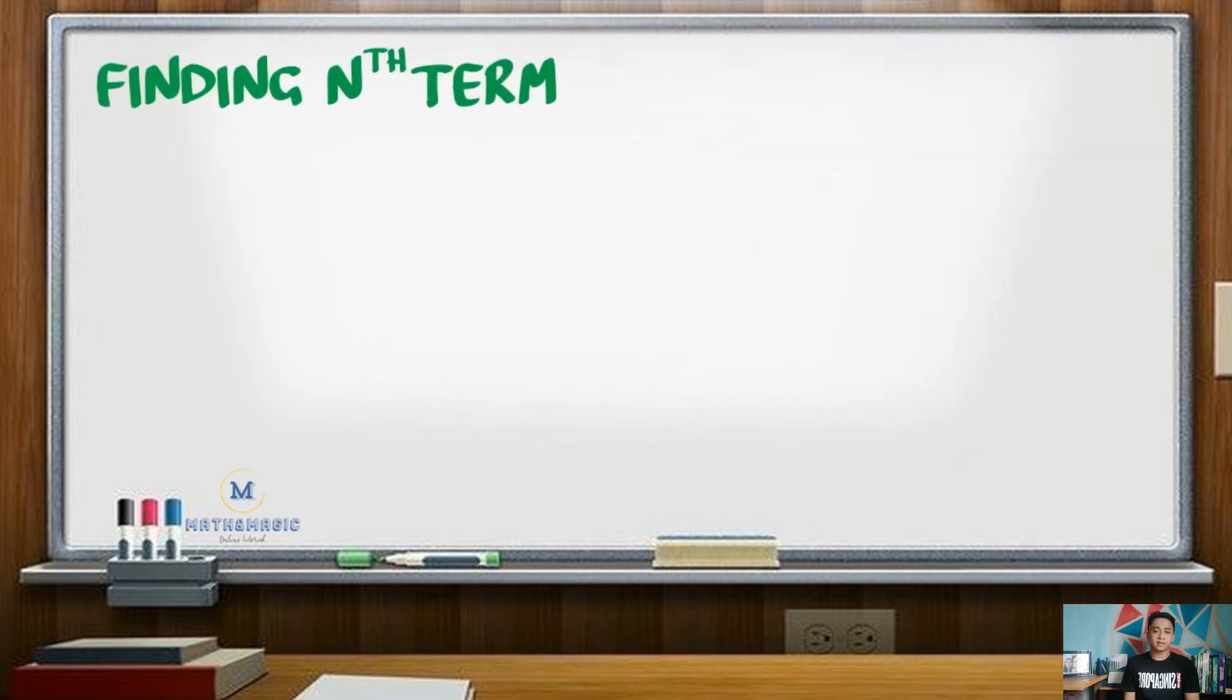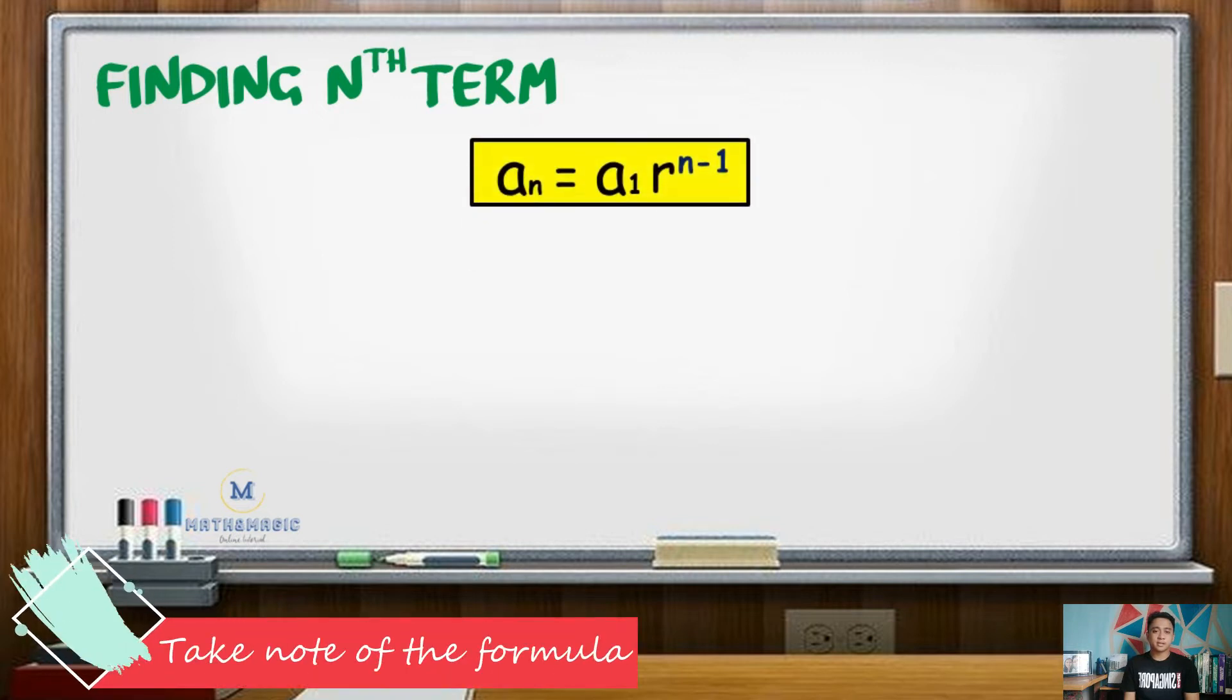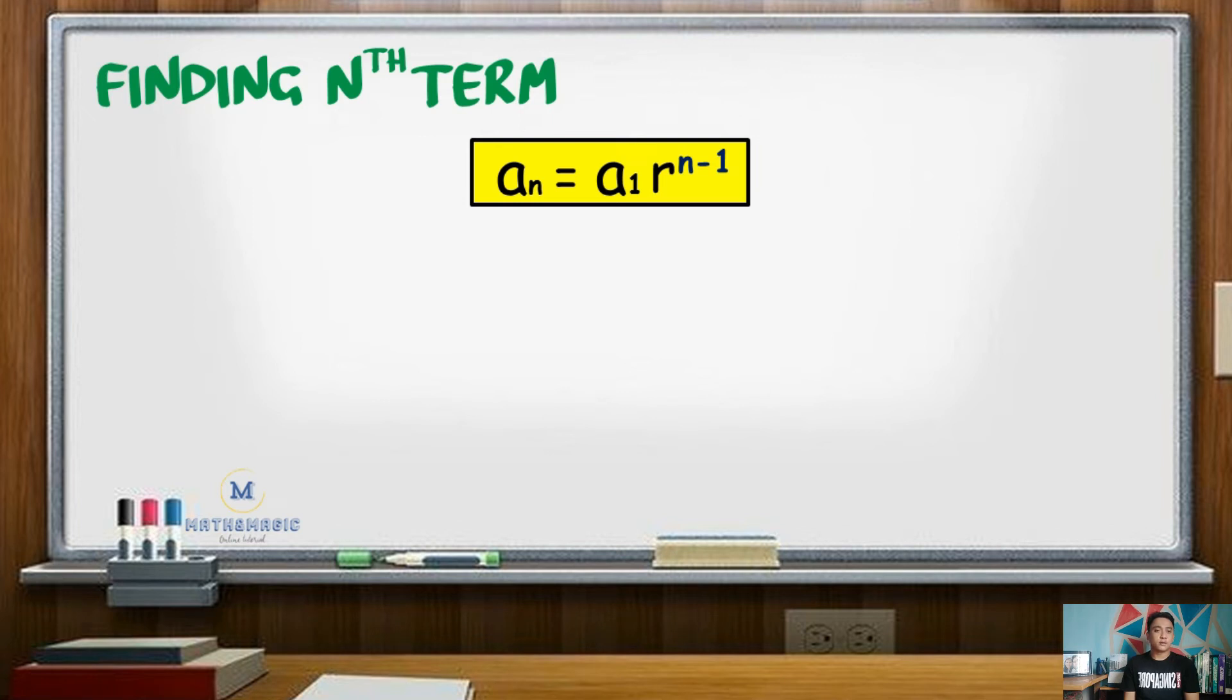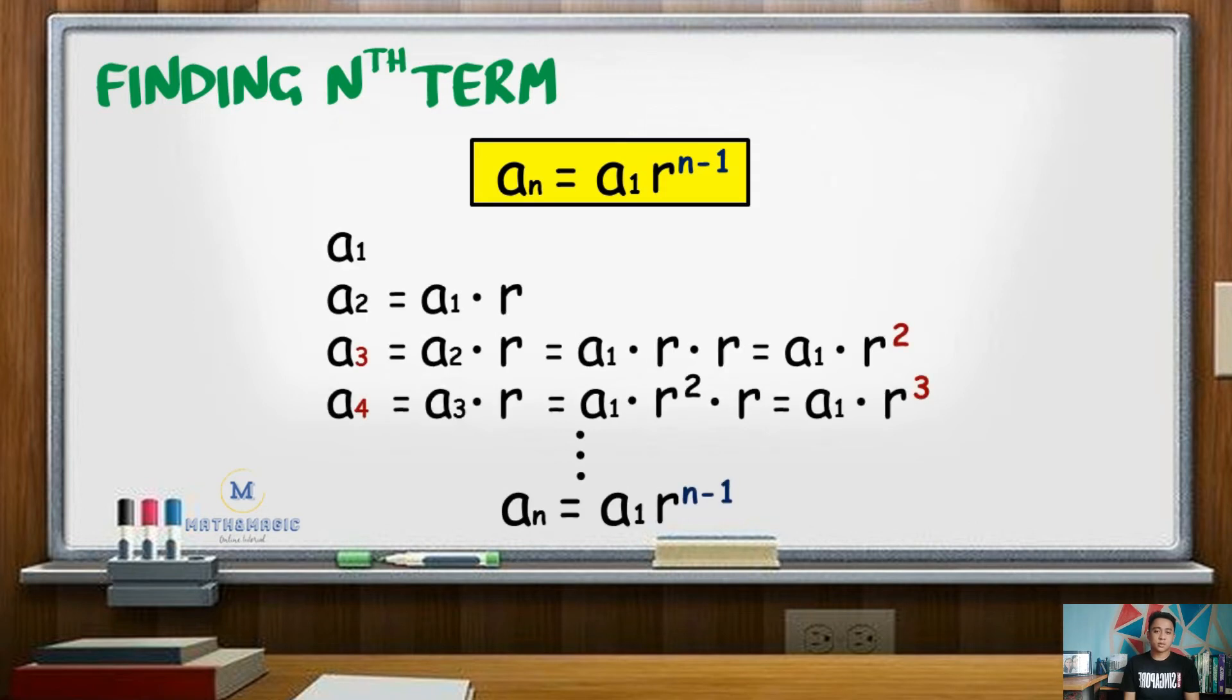Now, in finding the nth term of a geometric sequence, we follow the formula a sub n equals a sub 1 times r raised to n minus 1. If you want to know how we arrive at this formula, here is the illustration. As you can see, as the pattern continues, the exponent of the common ratio is always 1 less than the position of the indicated term.